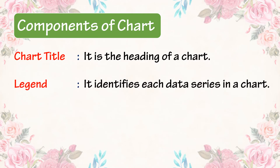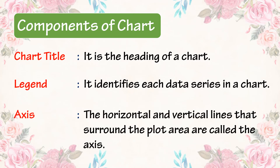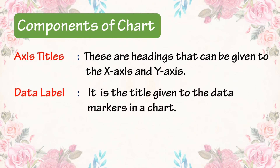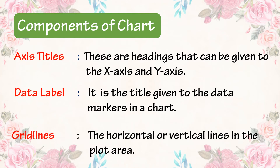Legend: it identifies each data series in a chart. Axis: the horizontal and vertical lines that surround the plot area are called axis. Axis titles: these are headings that can be given to the X axis and Y axis. Data label: it is the title given to the data markers in a chart. Grid lines: the horizontal or vertical lines in the plot area.